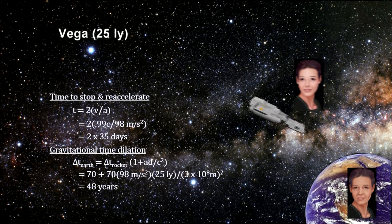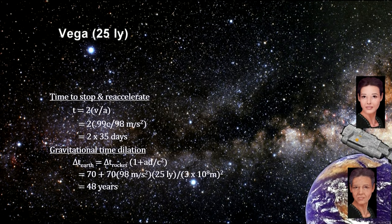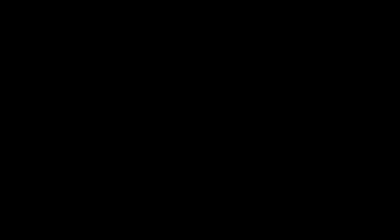The twin on Earth agrees. So instead of both twins thinking the other should be younger, they both agree that the twin on the rocket to Vega and back is younger. No contradiction is involved, and the paradox is resolved.